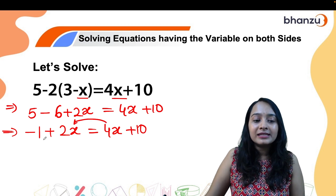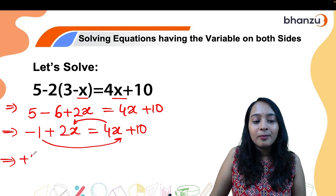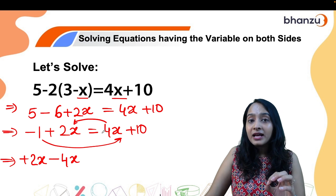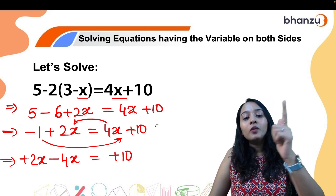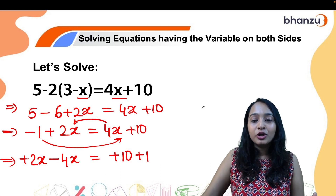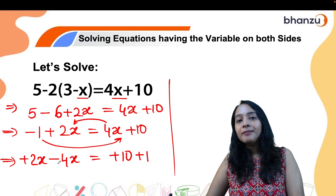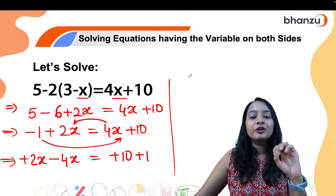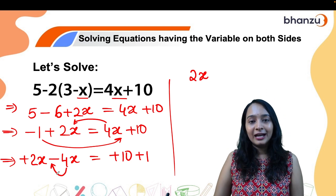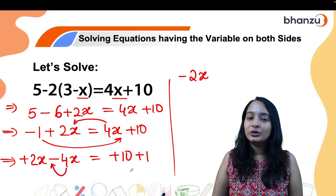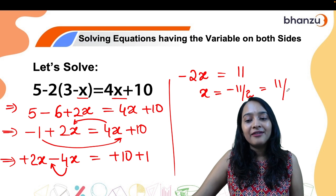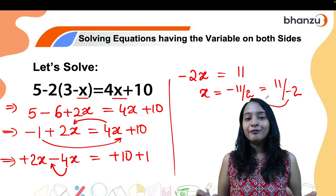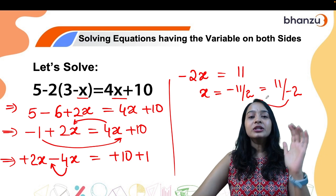Now we get all the variables to one side and all the constants to one side. Plus 4x shifted to the other side becomes minus 4x, so we have 2x minus 4x. Taking minus 1 to the other side gives plus 1, so we have 10 plus 1 equals 11 on the right. Since 4 is greater than 2 the sign of 4 carries forward, giving minus 2x equals 11, so x equals minus 11 by 2. The standard form keeps the negative sign in the numerator.